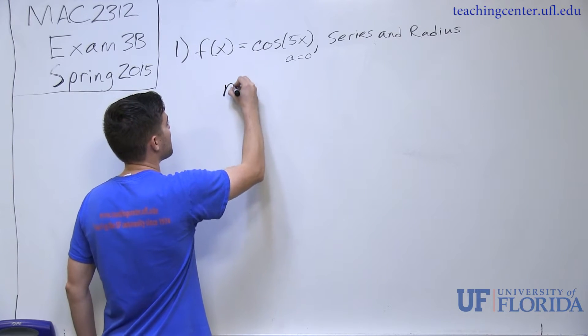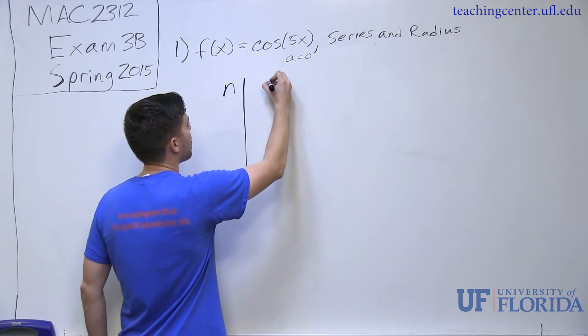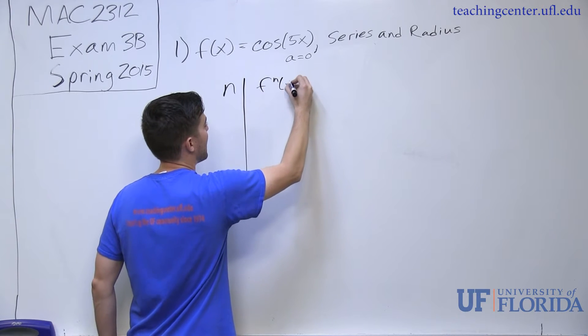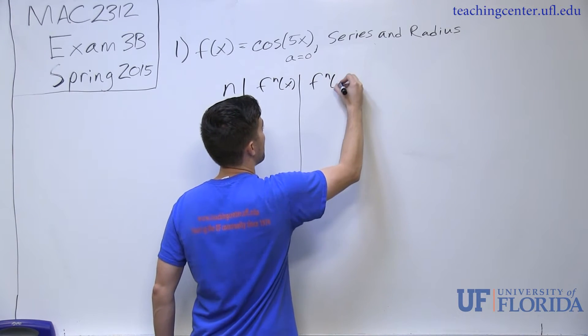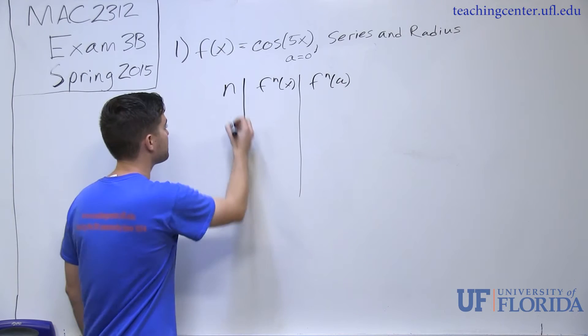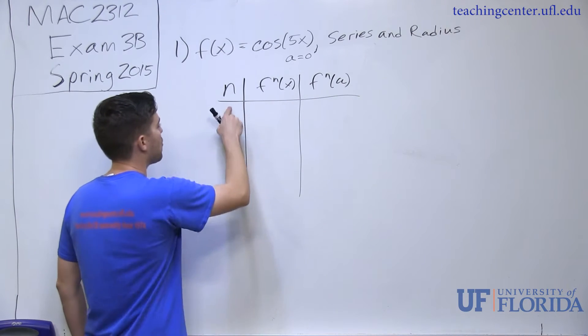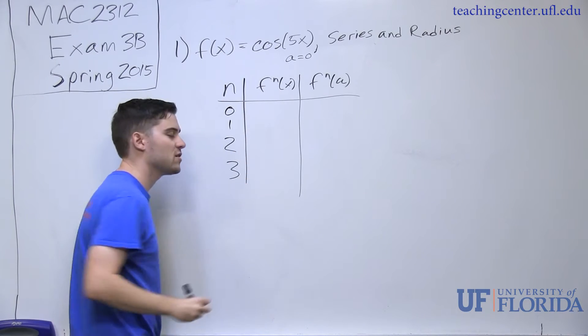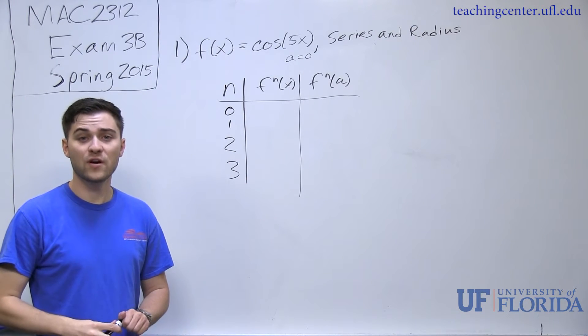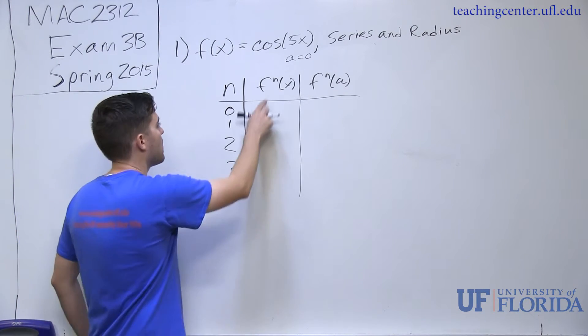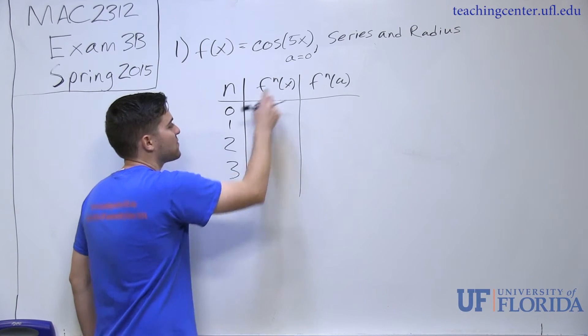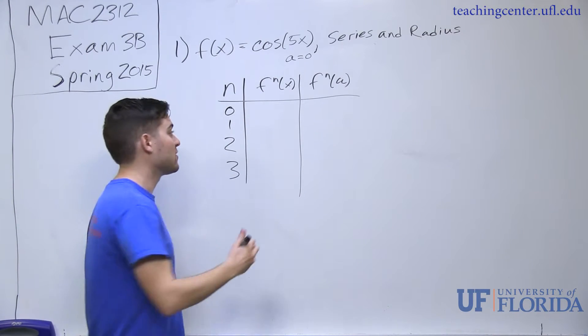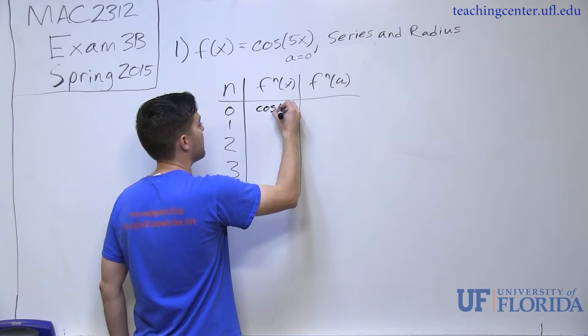I'm going to start by making my chart. I have my n column, I have my f^n of x column, and I have my f^n of a column. I'm going to start with just a few terms: 0, 1, 2, 3 is usually a good way to start off trying to find your Taylor coefficients. At n equals zero, f^0 of x is the original function itself, so I start with cosine of 5x.